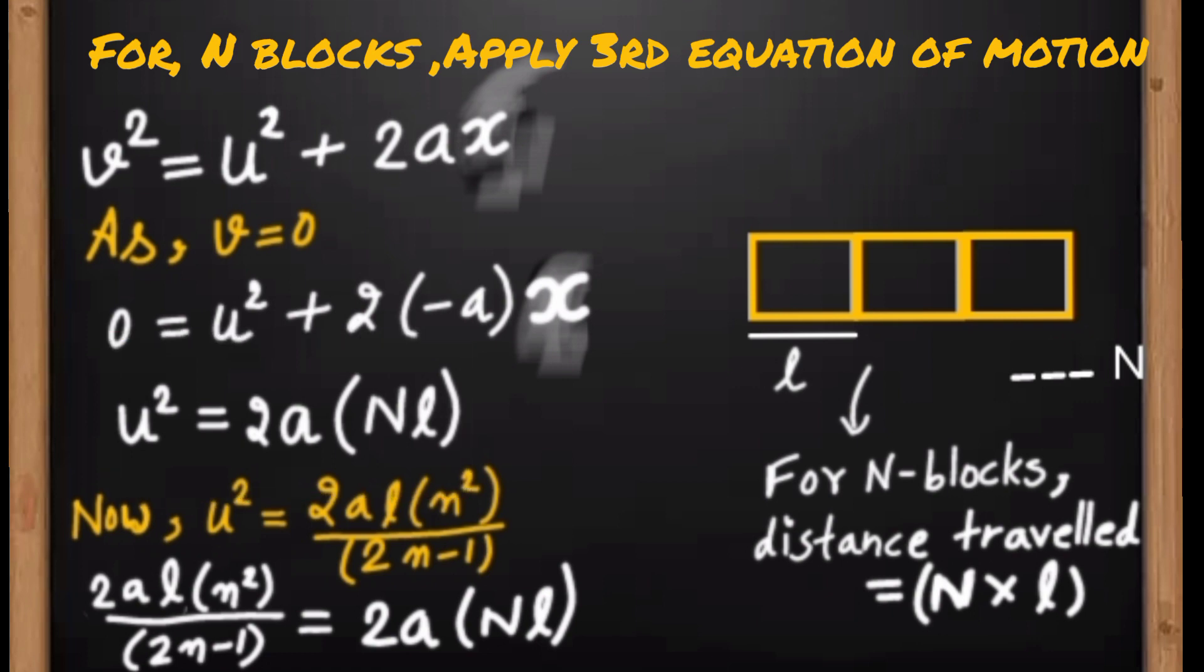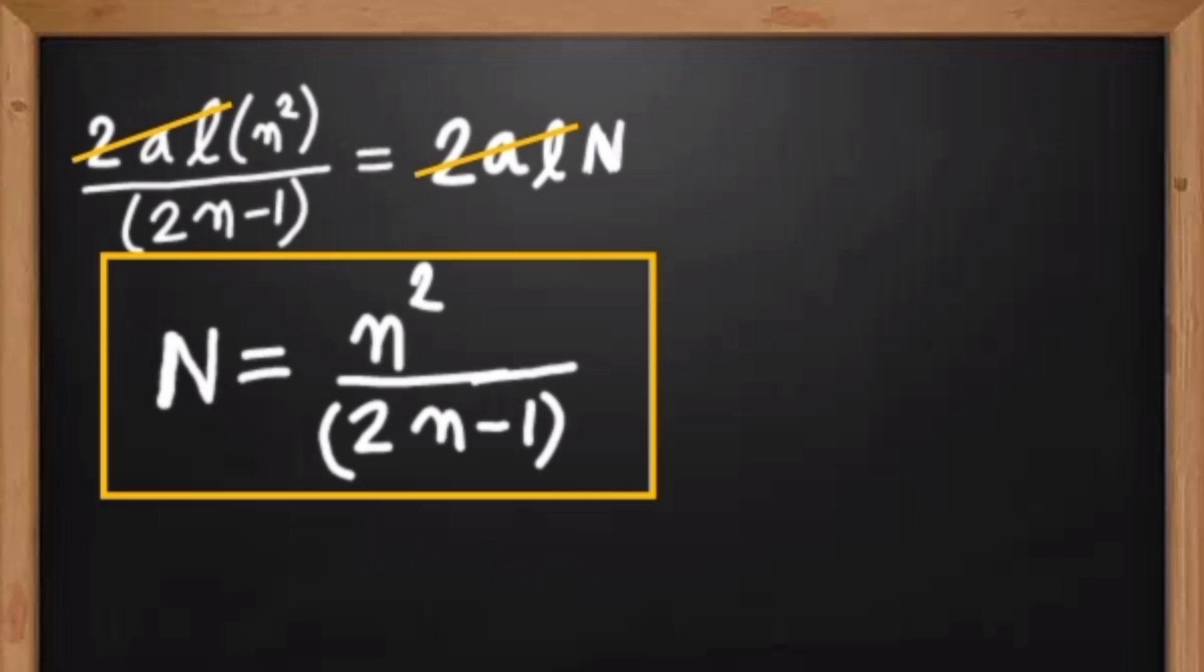Hence we can write u² = 2a·x. Substituting x = N·l, and the value of u² we already calculated, we get 2al·n²/(2n-1) = 2a·N·l. After simplifying, we get N = n²/(2n-1), where small n is the fraction of velocity lost by the bullet after passing through one block.